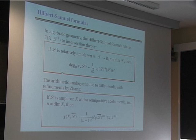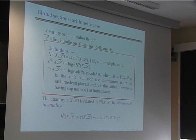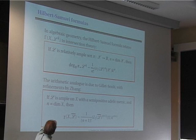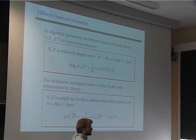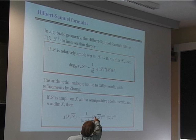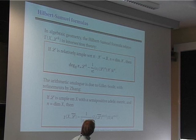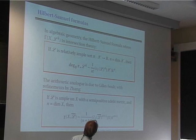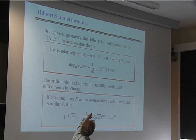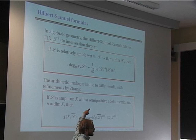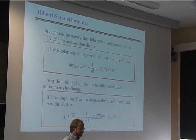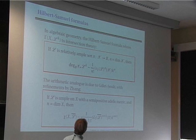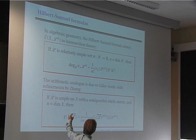I want to understand the behavior of these numbers chi(X, L̄). Going back to algebraic geometry, chi is the analog of the direct image of the line bundle L on the base B. There I have a Hilbert–Samuel formula: the degree of π_*(L^k) is approximately (1/N!) times the degree of X with respect to L times k^N, at least if L is relatively ample. This follows from Riemann–Roch and a vanishing theorem.